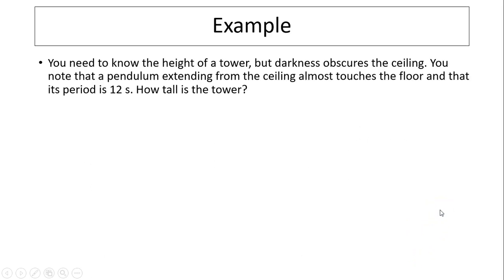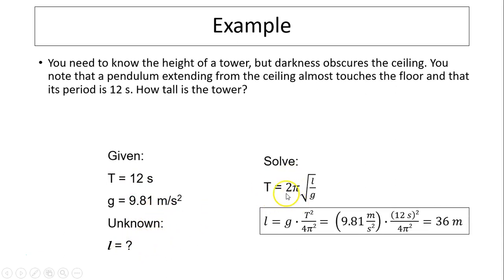Let's take a look at this example. You need to know the height of a tower, but darkness obscures the ceiling. You know that the pendulum extending from the ceiling almost touches the floor, and that its period is 12 seconds. How tall is the tower? So the height of the tower is the length of the pendulum. We are given the period, we know g on Earth is 9.81. We have to find L. We use the pendulum equation T equals 2π square root of L over g. We solve for L. We square both sides, so L equals g times T squared divided by 4π squared. So you can figure out L is 36 meters.